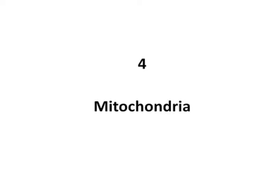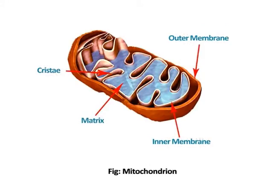The next organelle is mitochondria. Mitochondria are rod-shaped organelles bound by double membranes consisting of an outer membrane and an inner membrane. The space between the membranes is called the intermembrane space and the membranes surround an internal space called the matrix. The outer membrane contains many channels formed by the protein porin, while the inner membrane is highly convoluted forming a large number of infoldings called cristae. The matrix contains the mitochondrial DNA, 70S ribosomes and metabolic enzymes.